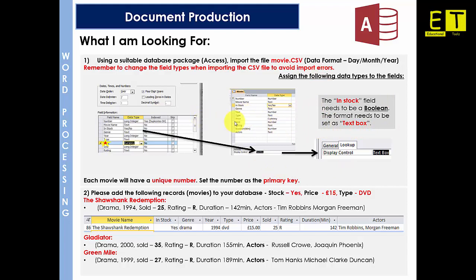When importing, make sure where it says 'in stock' you change it to yes and no, and then when you go into Design View you set it as a text box. Each movie will have a unique number, so set the number as the primary key — which is the first field here. Ensure it is set as the primary key; if you look closely you will see a key icon next to it.